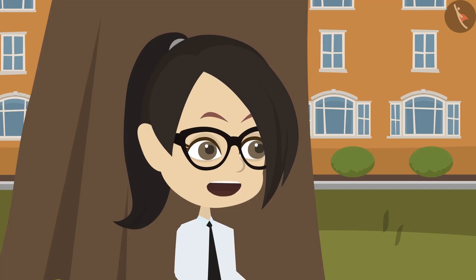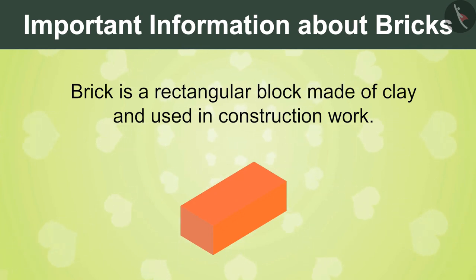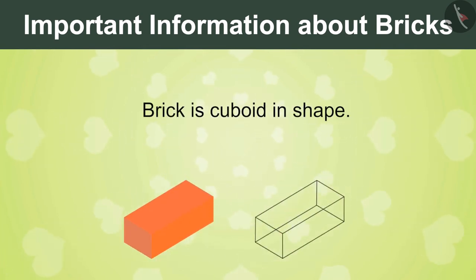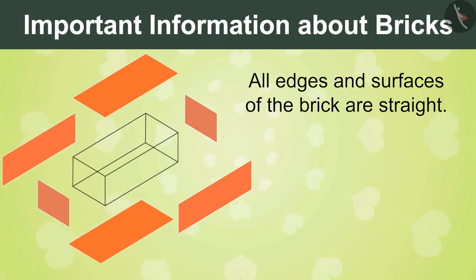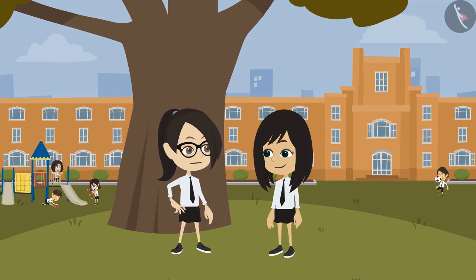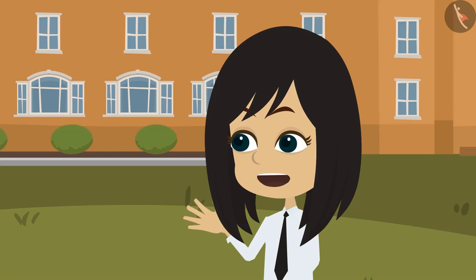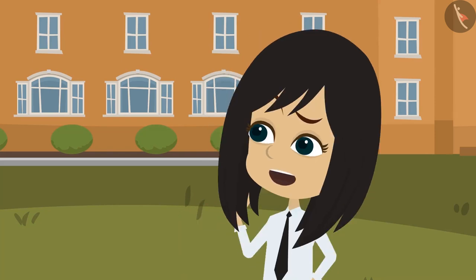I know all the information about bricks now. Bricks are made by baking clay and are used for construction work. A brick is in the shape of a cuboid — it has 6 surfaces and 12 edges, and all the edges and surfaces of the brick are straight. But I think the real fun would be to make something with them. Vandana, where can I learn more about the uses of bricks? I would like to know more.